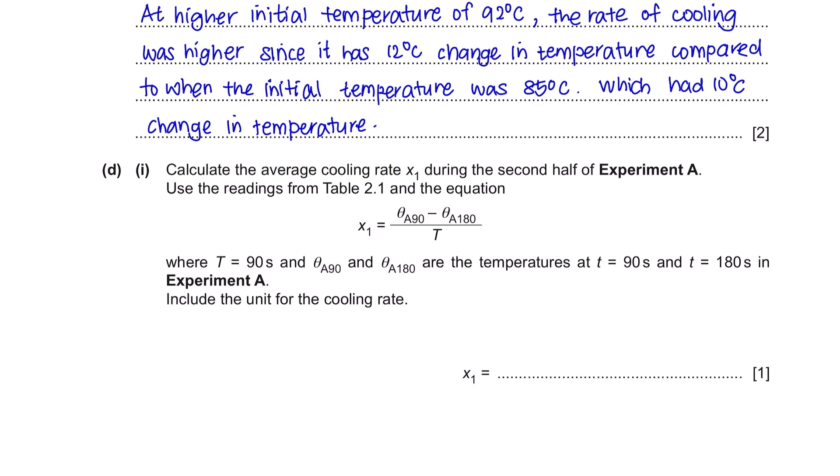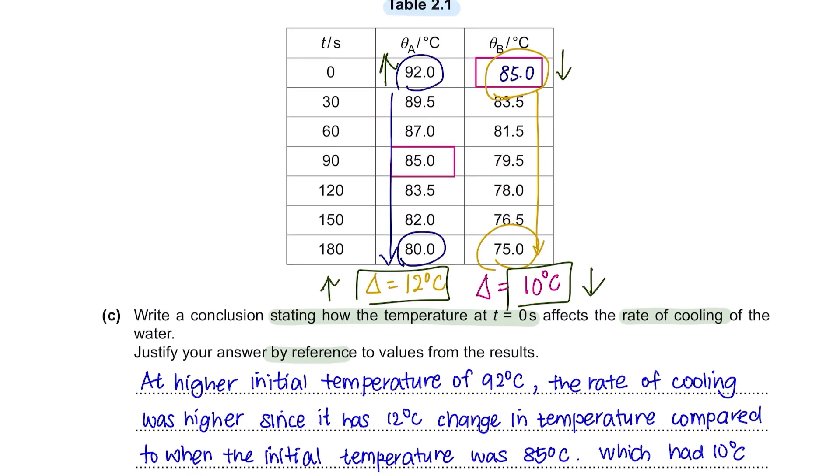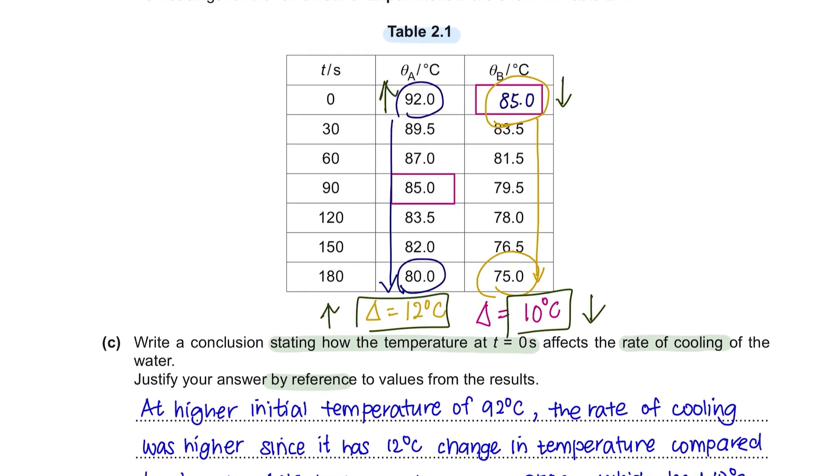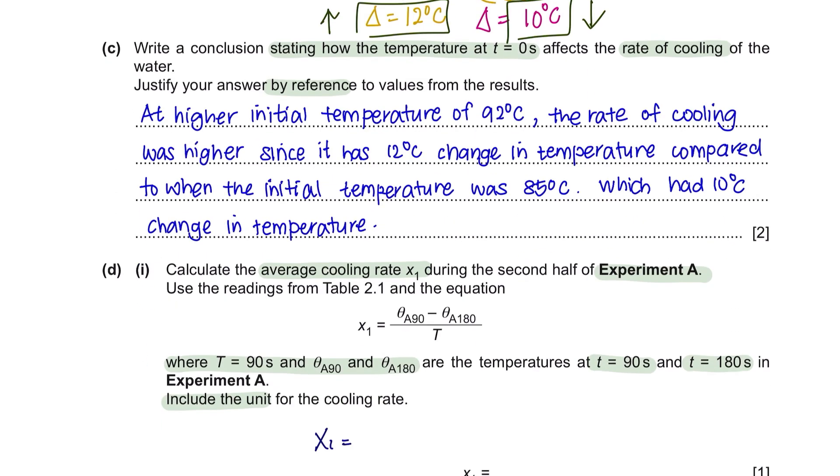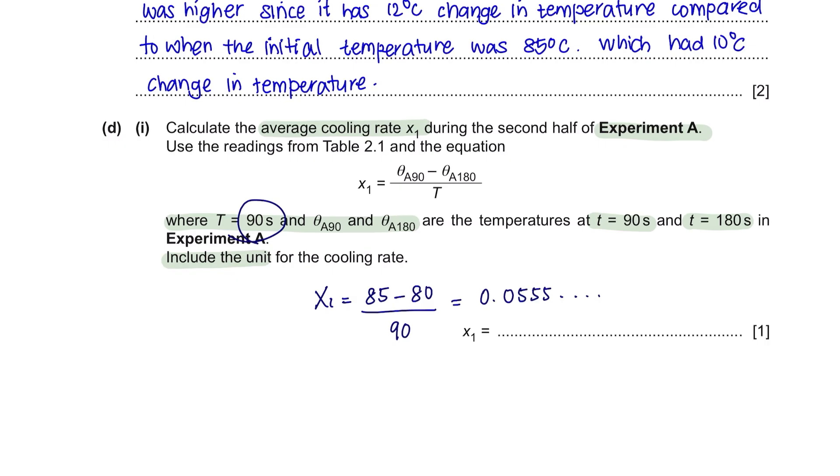Question D, part 1. Calculate the average cooling rate X1 during the second half of experiment A. Use the readings from table 2.1 and the equation, where theta 90 seconds and theta 180 are the temperatures at T equals 90 seconds and T equals 180 seconds in experiment A. Include the unit for the cooling rate. Since the equation is already given, all we have to do is substitute the values. In experiment A, the temperature at 90 seconds is 85 and 180 is 80 and the value of T is 90 seconds, giving you this value. Remember, you have to write your answers in two significant figures. So that would be 0.056. Do not forget to include your unit, which is degrees Celsius over seconds.